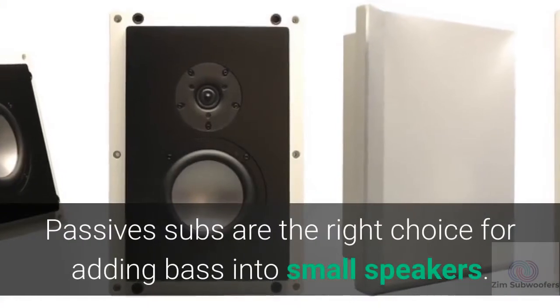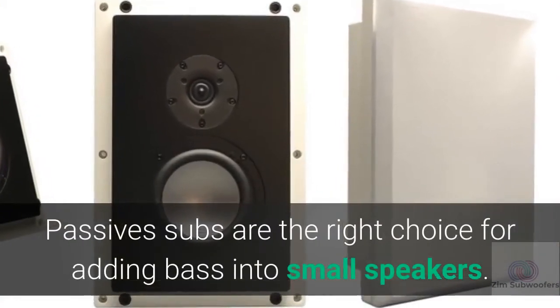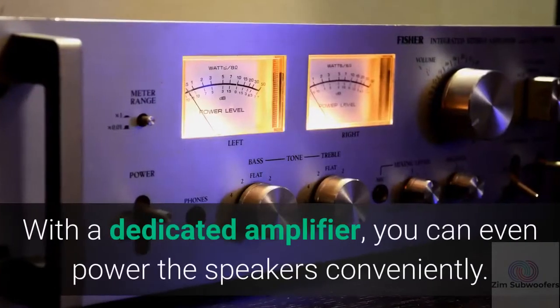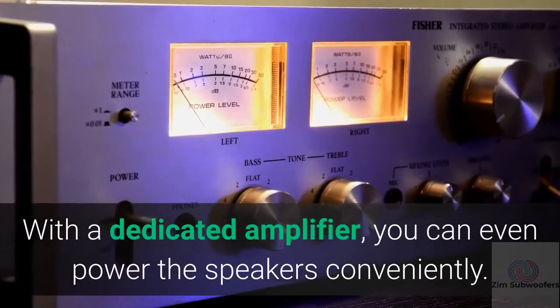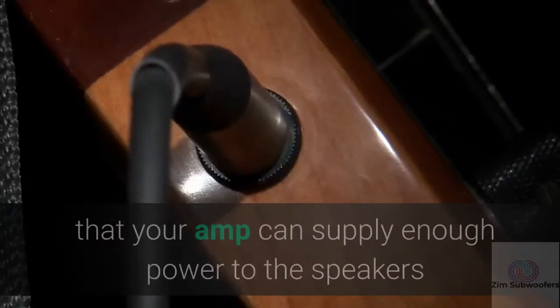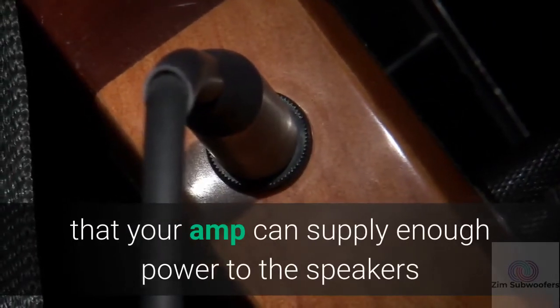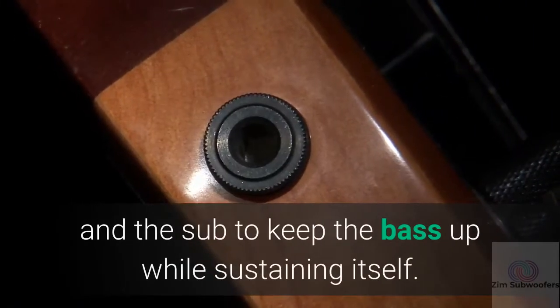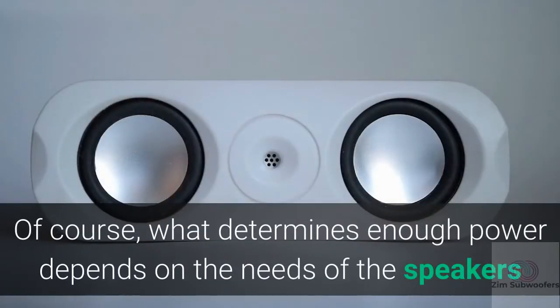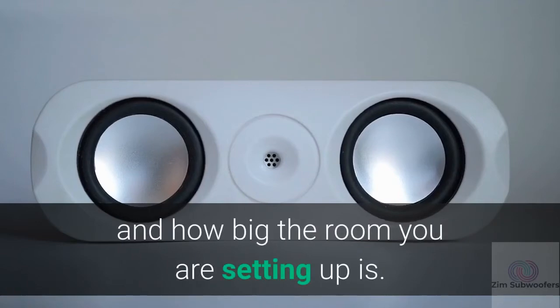Passive subs are the right choice for adding bass into small speakers. You can regulate the bass to fit the speakers. With a dedicated amplifier, you can even power the speakers conveniently. The other side, though, is that you have to make sure that your amp can supply enough power to the speakers and the sub to keep the bass up while sustaining itself. Of course, what determines enough power depends on the needs of the speakers and how big the room you are setting up is.